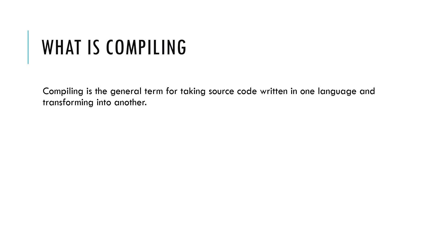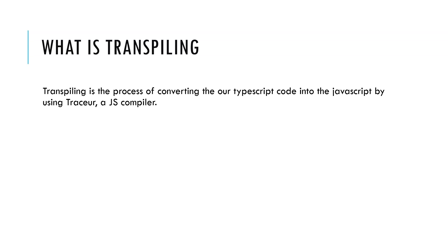What is compiling? Compiling is the general term for taking source code written in one language and transforming it into another. What is transpiling? Transpiling is the process of converting TypeScript code into JavaScript using a TypeScript or JS compiler.